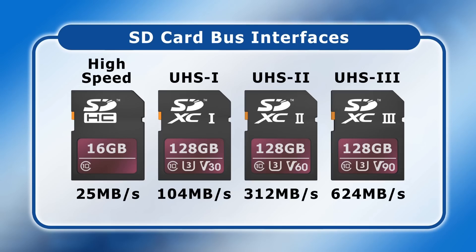Normally all you see indicated on a card is a single Roman numeral, with most modern SD cards being labelled 1 or 2 to indicate they have either a UHS-1 or UHS-2 bus interface. Note that here UHS again stands for Ultra High Speed, but that an SD card's bus interface specification is entirely distinct from its UHS speed class.